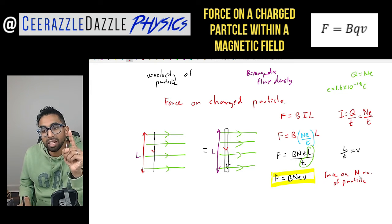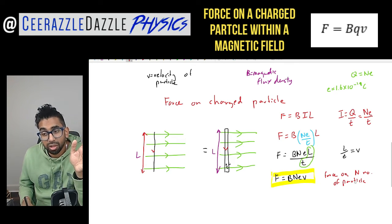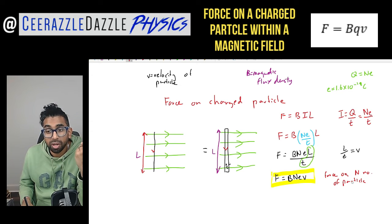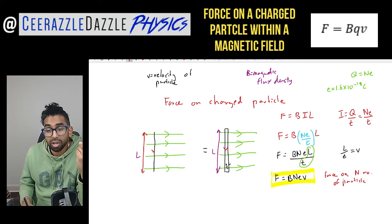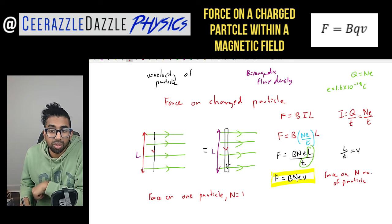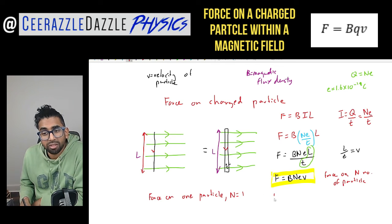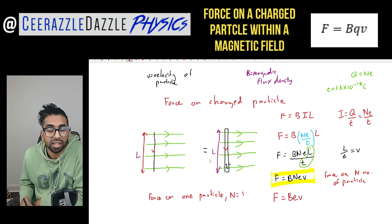So if this is the force on N particles, what would the force be on one particle? If we want the force on one particle, we take N is equal to one, because this is the force on all of the particles, but for one particle N is equal to one. So plugging that in, we know that the force on one charged particle will be equal to BeV.